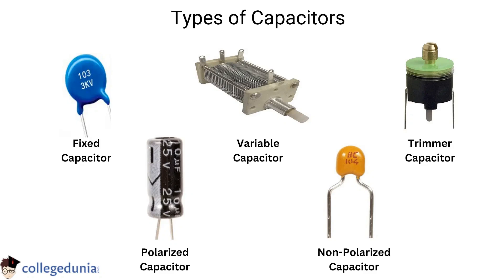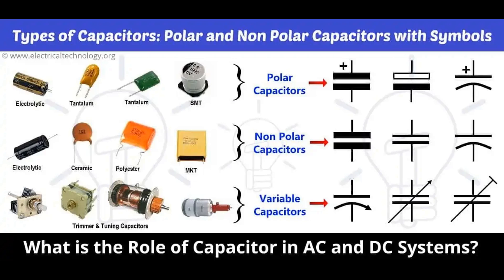Starting capacitors are especially important for induction motors, which may require higher torque to overcome initial inertia and bring the motor up to its operating speed. The starting capacitor is connected in series with the motor's auxiliary winding during startup. Once the motor reaches a certain speed or operates for a specific duration, a switch called a centrifugal switch disconnects the starting capacitor from the circuit, as its purpose is fulfilled during startup.